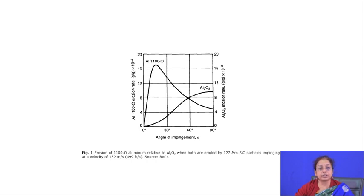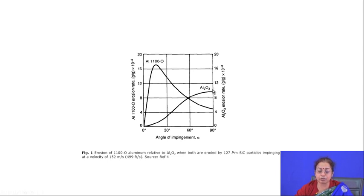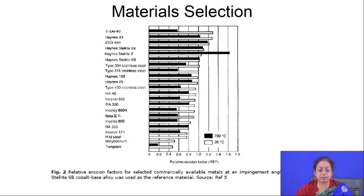This difference is because the erosion mechanism differs between materials. For metallic material, the erosion mechanism is mainly by cutting — at a lower angle of impingement, the sharpness and energy of the particle play the most important role in causing maximum material removal. For ceramic material, when particles fall perpendicular to the surface, the maximum load is borne by the surface, causing maximum erosion. When selecting materials for erosion-resistance applications, you must know the erosion behavior of different materials.